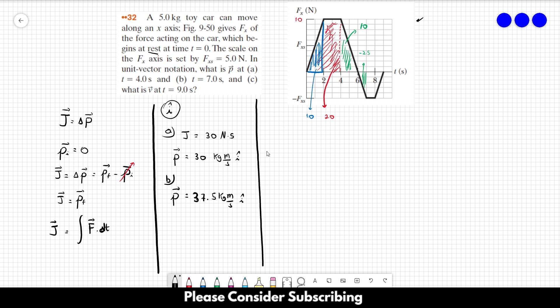And for letter C, we need 9 seconds. So we just have to add this area here. So this area is 5 times 1 minus 5. And this is minus 2.5. So it goes like 30 plus 10, 40 minus 10, 30 again. So the momentum is equal to 30 kilograms meters per second in the i-direction. However, for letter C, it wants the velocity and not the momentum.